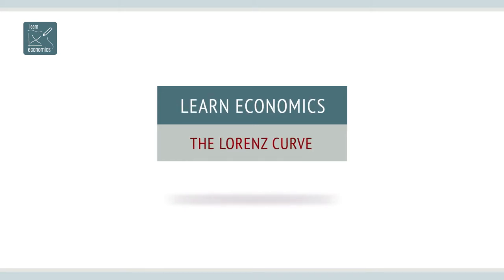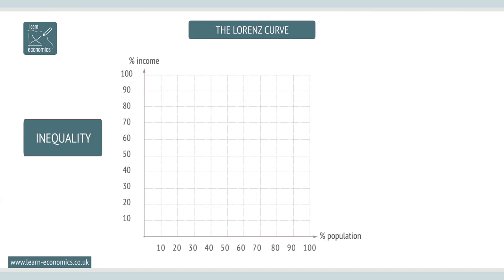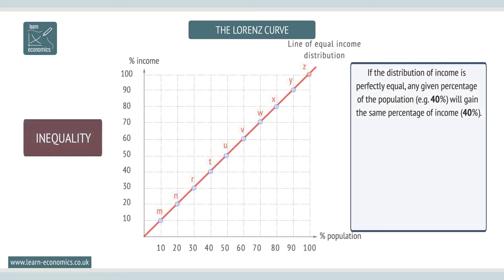Inequality: the Lorenz curve. The extent of inequality can be indicated through Lorenz curves. If the distribution of income is perfectly equal, any given percentage of the population — for example 40% — will gain the same percentage of income, at 40%.